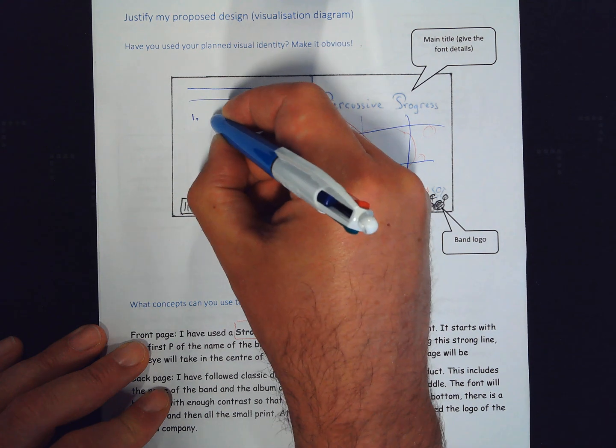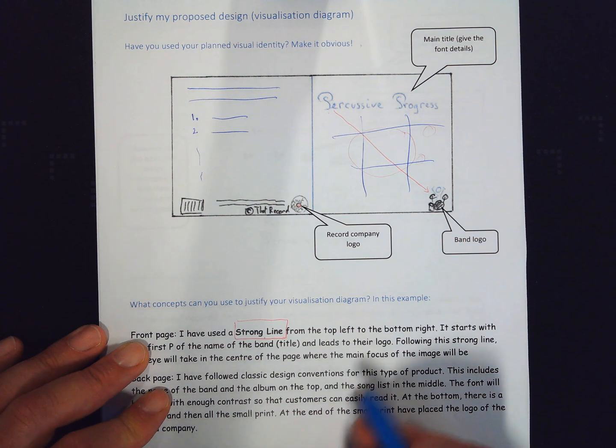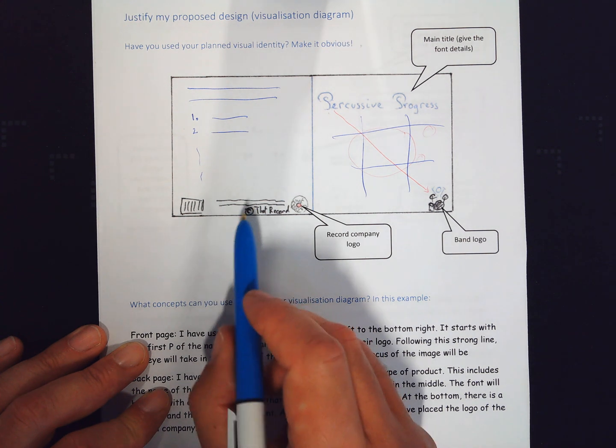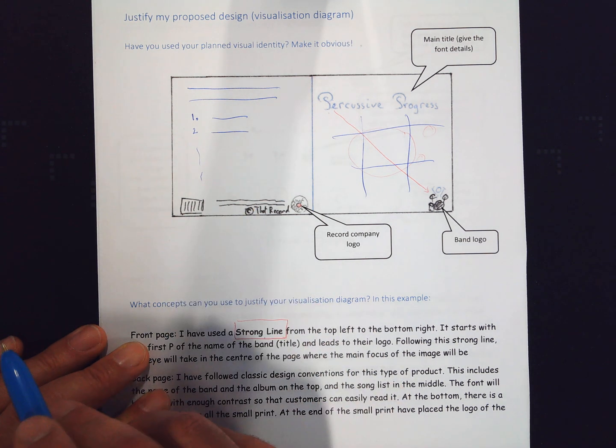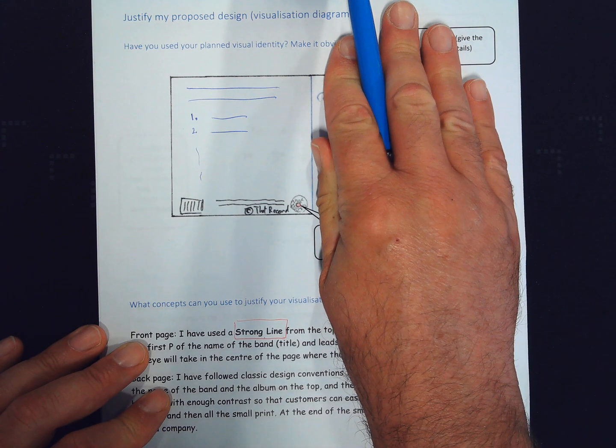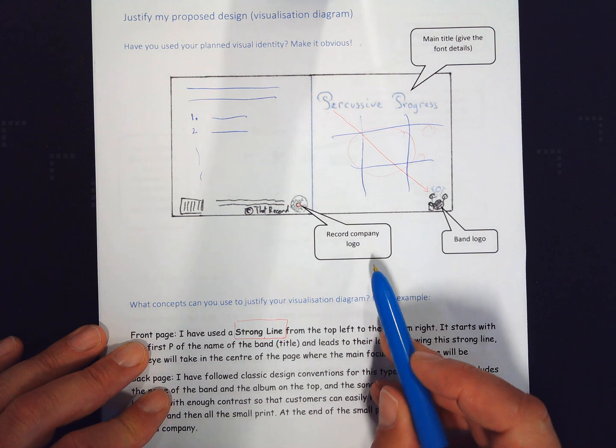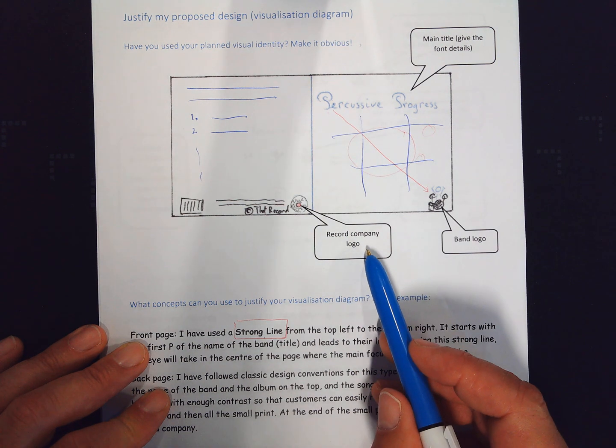Then you would have the song list over there taking most of the space. At the bottom, I've got my small print and the barcode. And to close the back page, because this is the back page when you fold the picture, I'm closing it by reusing the logo from the record company.